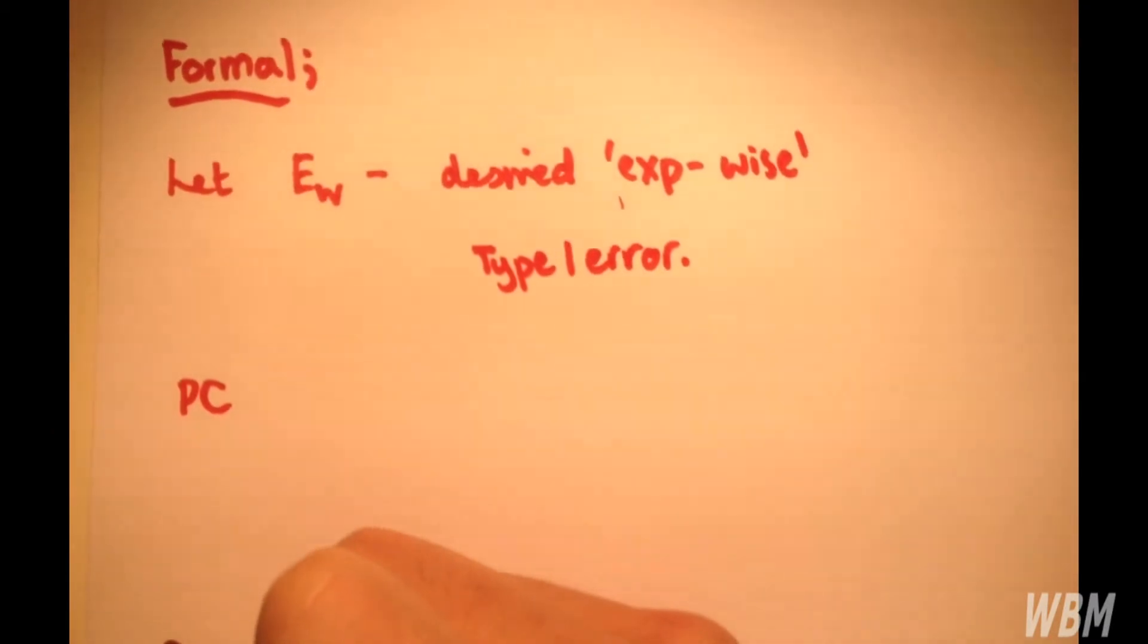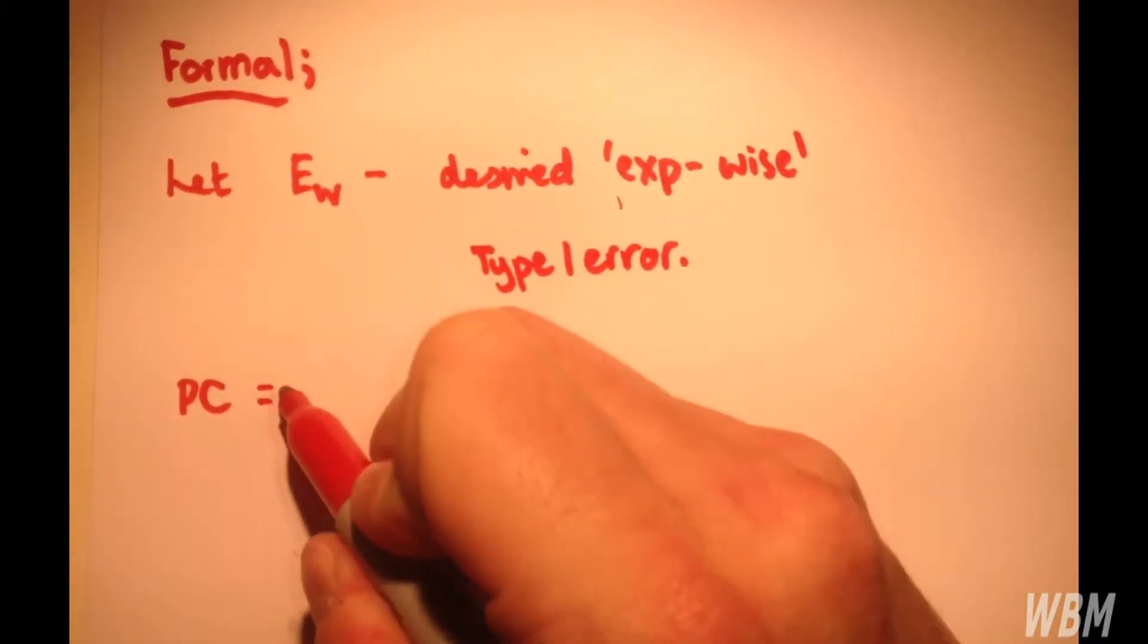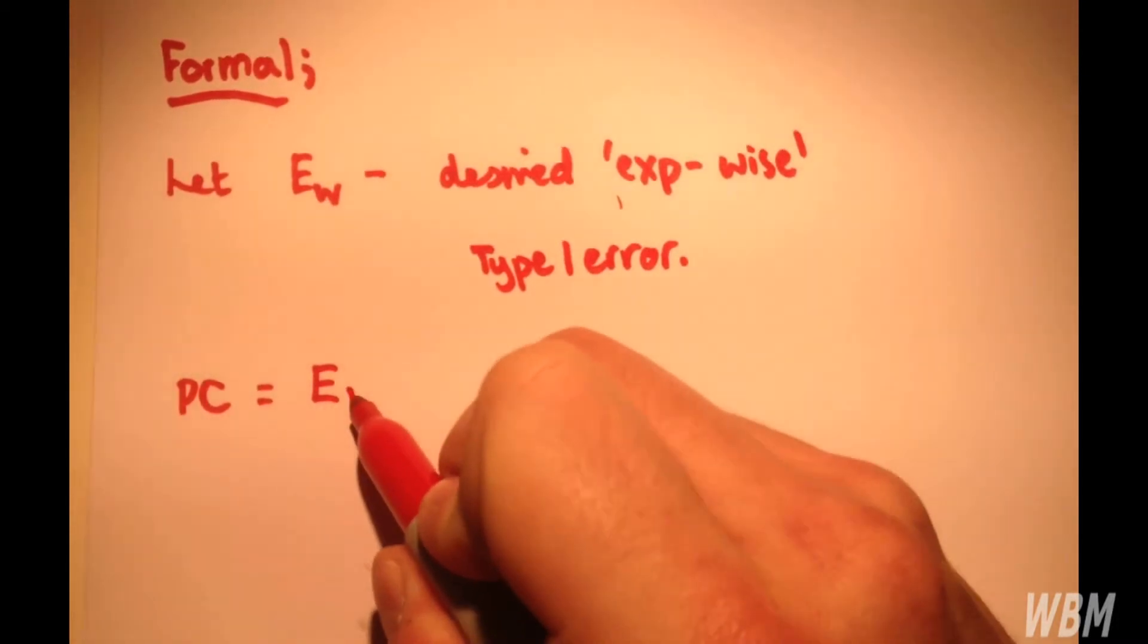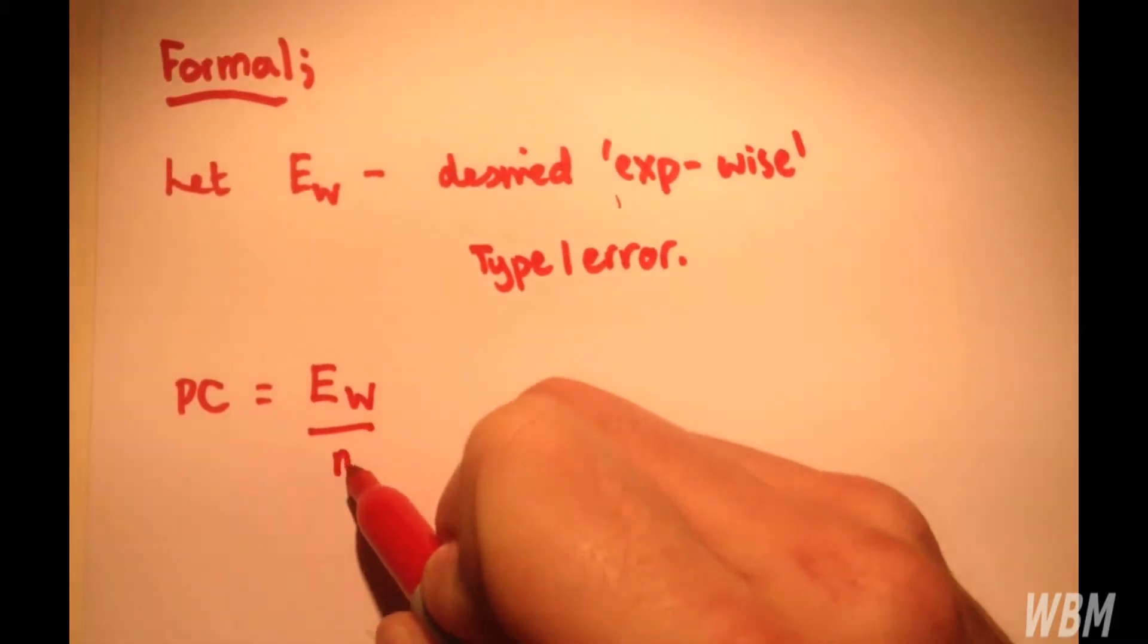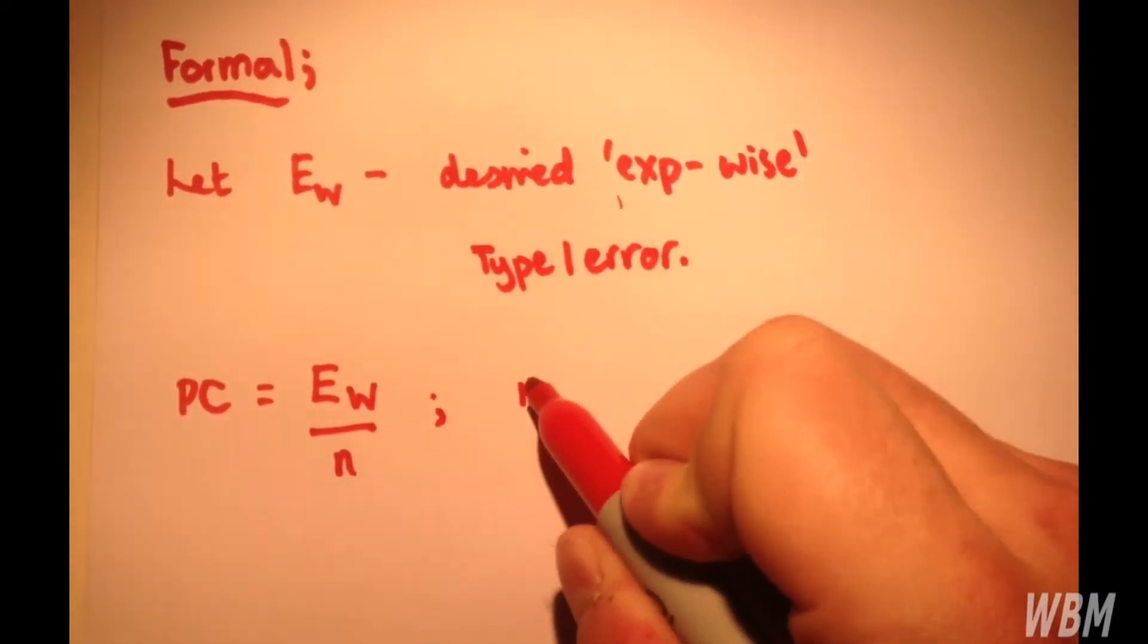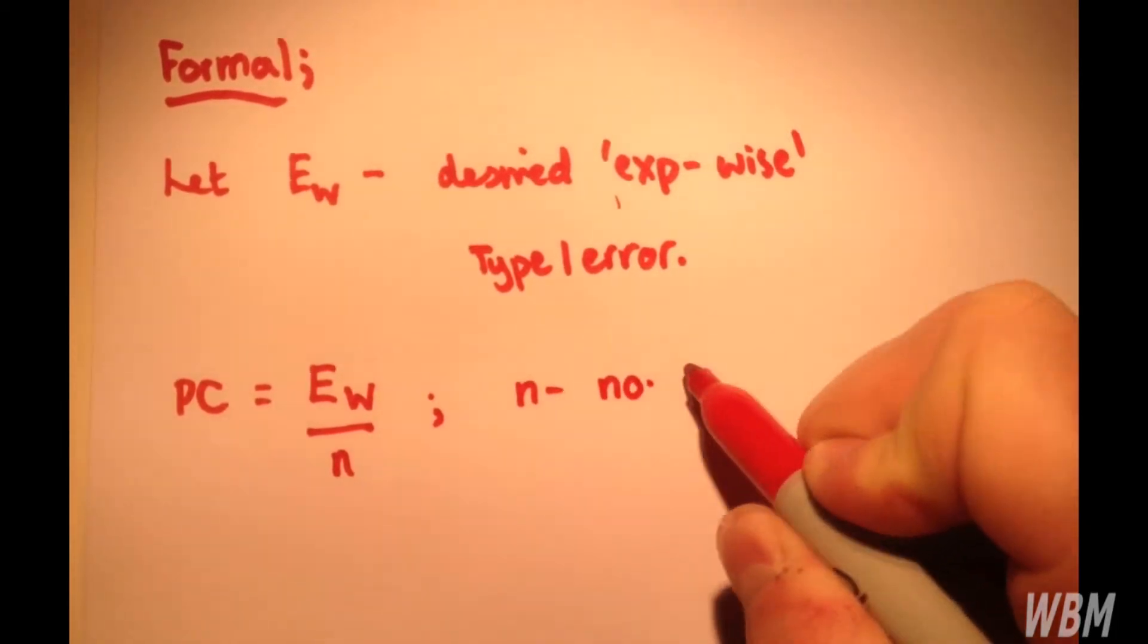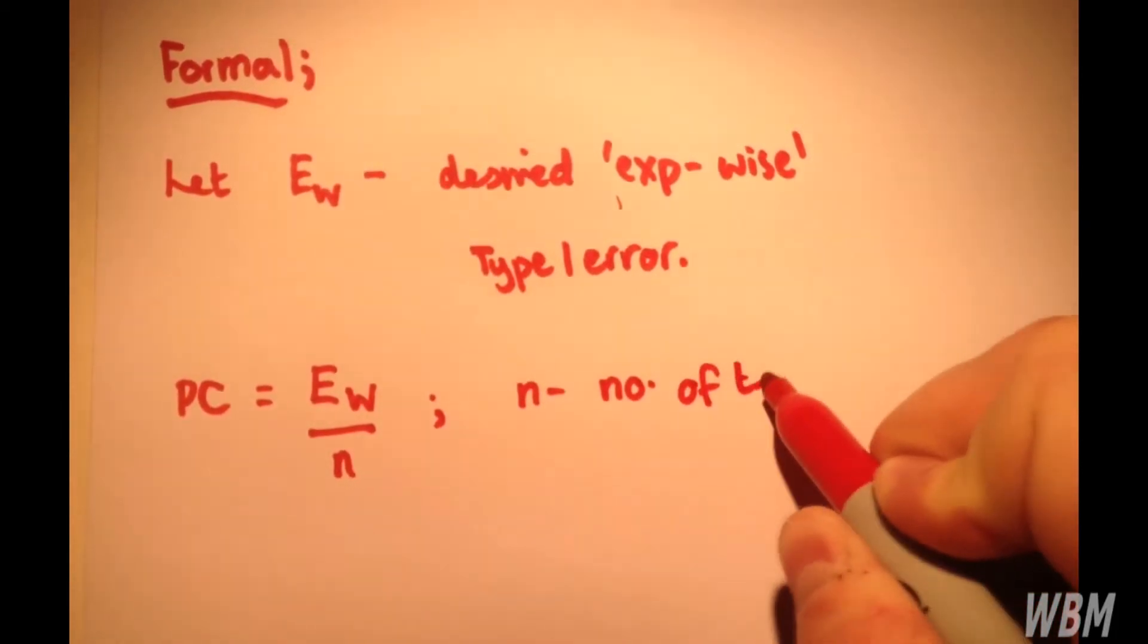And this is equal to the experiment-wise risk over n, where n is the number of tests.